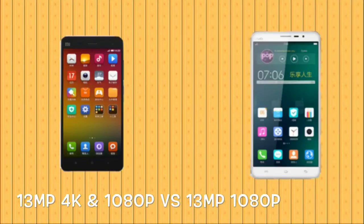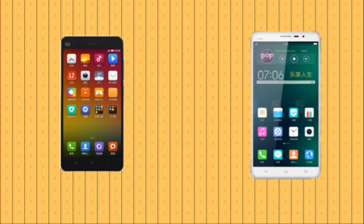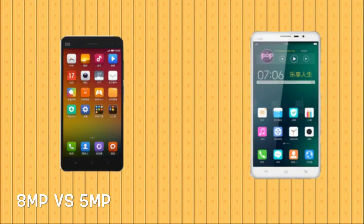In terms of video recording, we have 4K as well as 1080p HD video recording on the Mi 4, versus simple 1080p HD video recording on the Vivo X-Play 3s — there's no 4K video recording on the X-Play 3s. In terms of the front-facing camera, we have an 8-megapixel front-facing camera on the Mi 4 versus a 5-megapixel camera on the X-Play 3s.